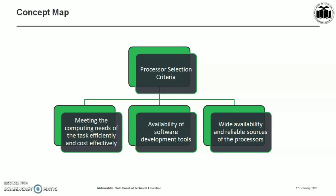This shows the concept map of processor selection criteria. Primarily, there are three categories or three criteria. On the basis of these, we can select a particular microcontroller or processor for an application.